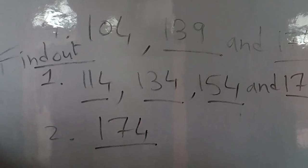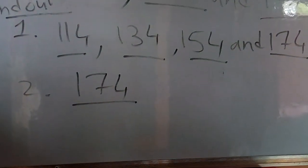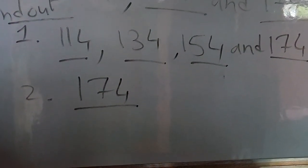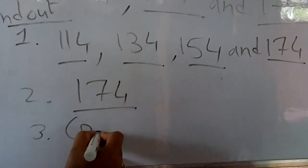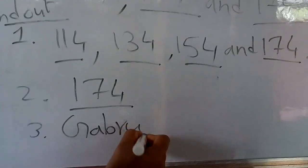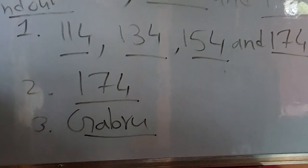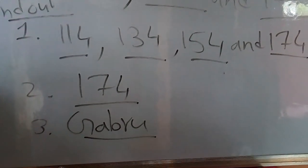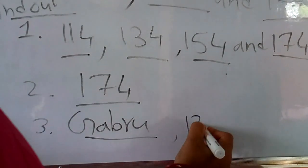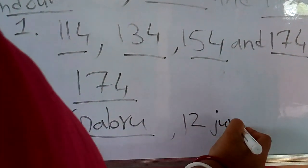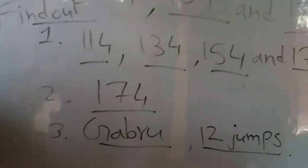The next question: guess who will finish in the least number of jumps? In the least jumps, who will finish? It is Gabru. Because Gabru is taking the maximum jump — that is plus 7. So the third answer is Gabru. Gabru will jump in the least jumps and finish the jumping in only 12 jumps.